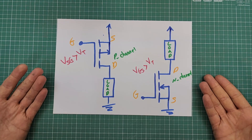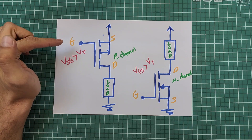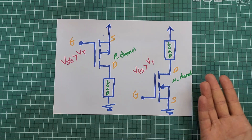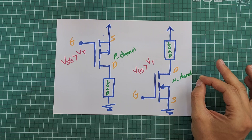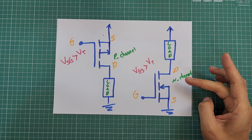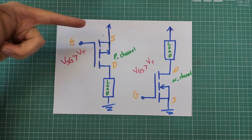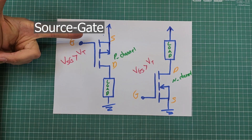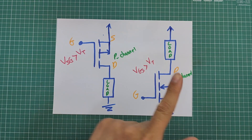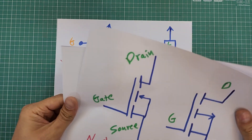We can use MOSFETs to switch DC loads. N-channel MOSFETs are used to switch the ground side of the power supply, and P-channel MOSFETs are used to switch the high side. Each MOSFET has a parameter called Vt, referred to as the threshold voltage — say 4 volts, 5 volts, or 10 volts. By applying a voltage greater than the threshold voltage to the gate-source of an N-channel, it turns on and lets current pass from its drain to its source. A P-channel MOSFET turns on when the source-gate voltage is greater than the threshold voltage.